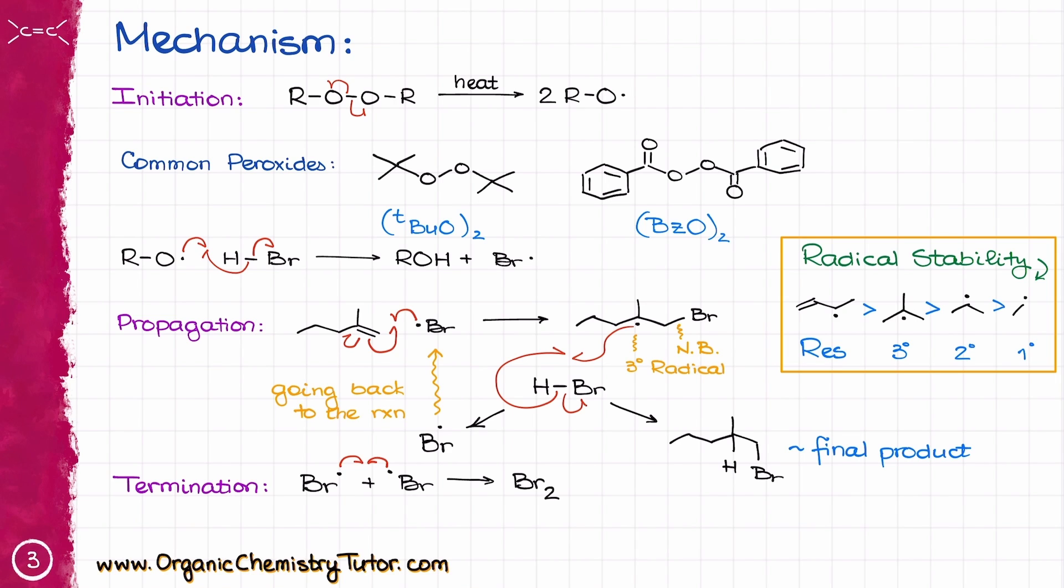So, to recap, we start our initiation step with the formation of our radicals. So, in the initiation step, we are going to have initially radicals formed by taking our peroxide and breaking it apart. Next, the peroxide is going to react with our HBr, actually forming the Br dot, the Br radical that is then going to go into the propagation cycle.